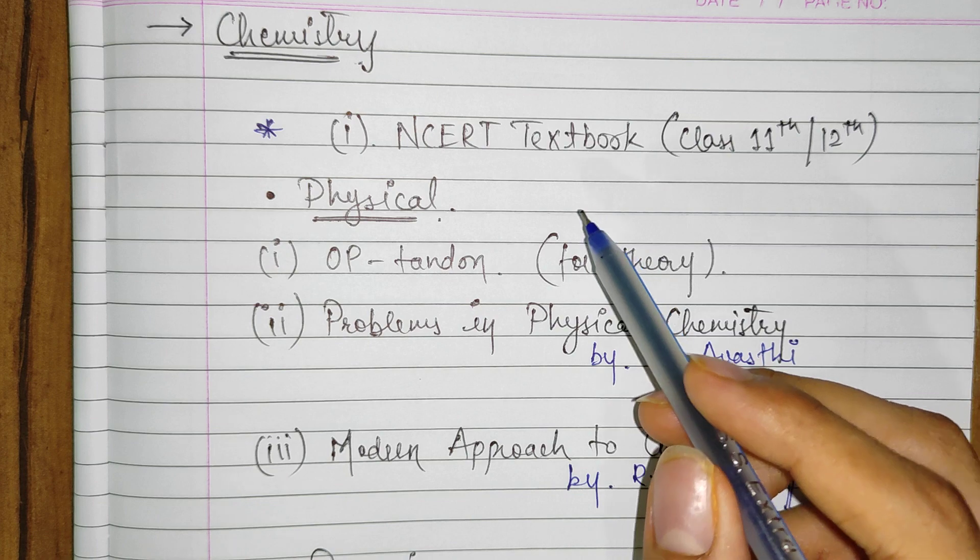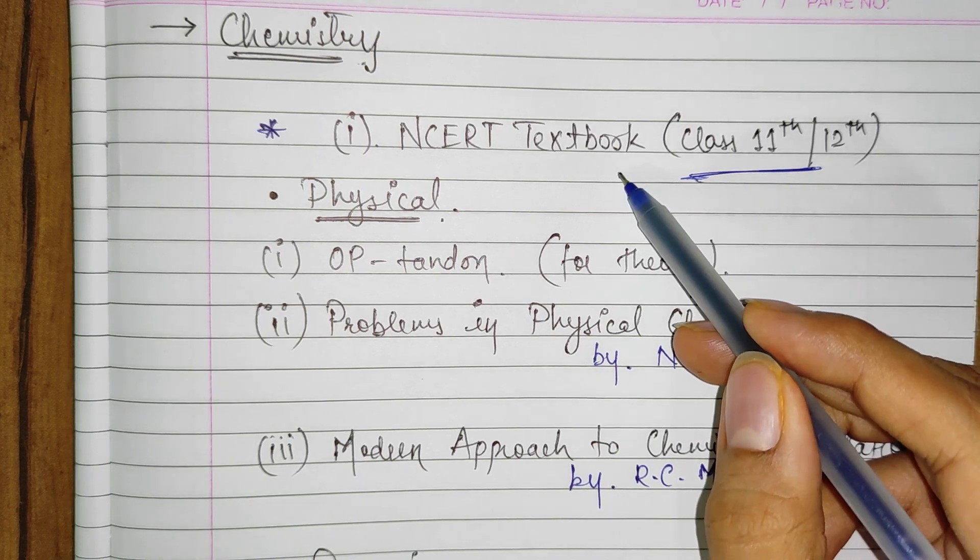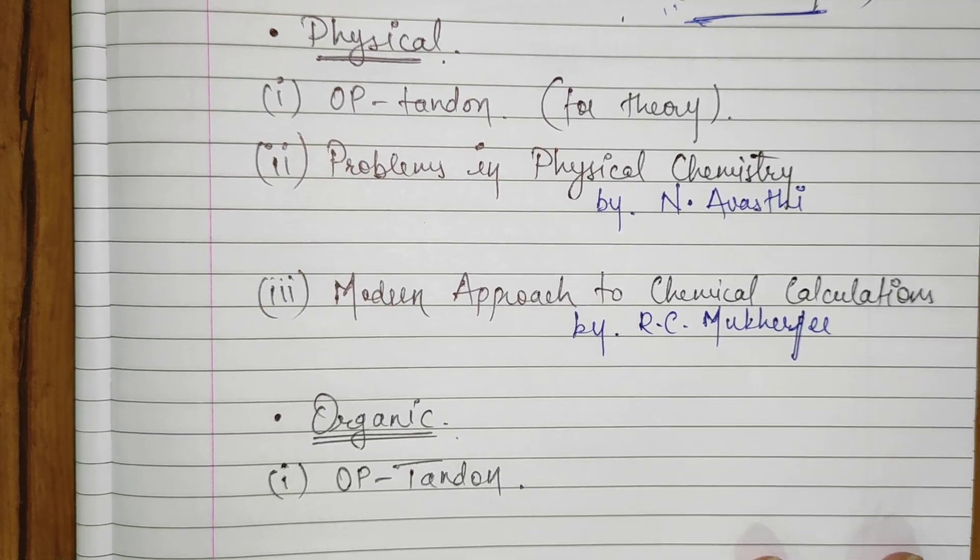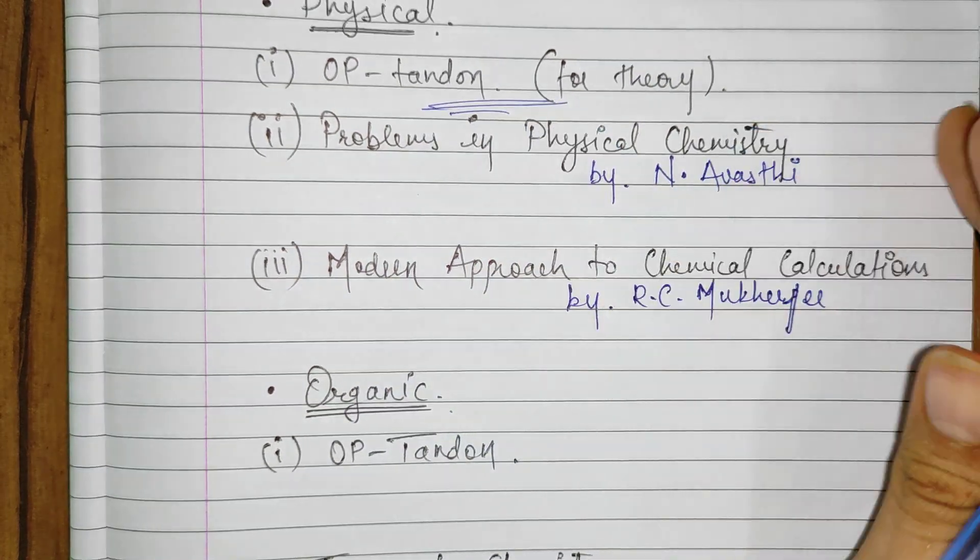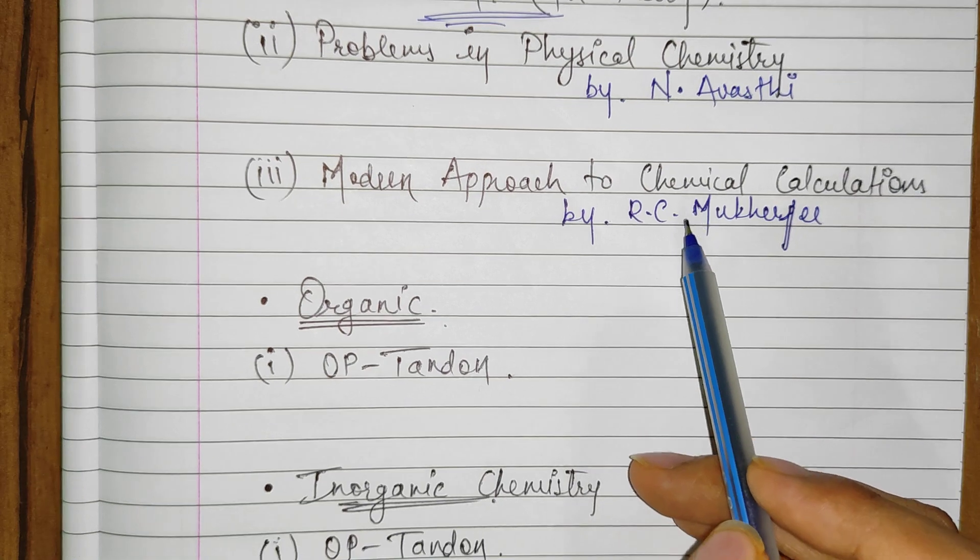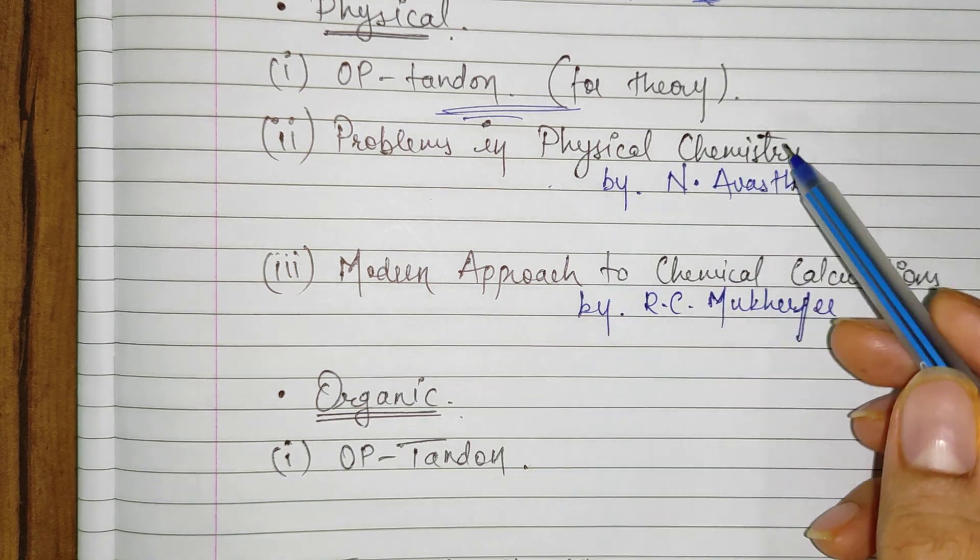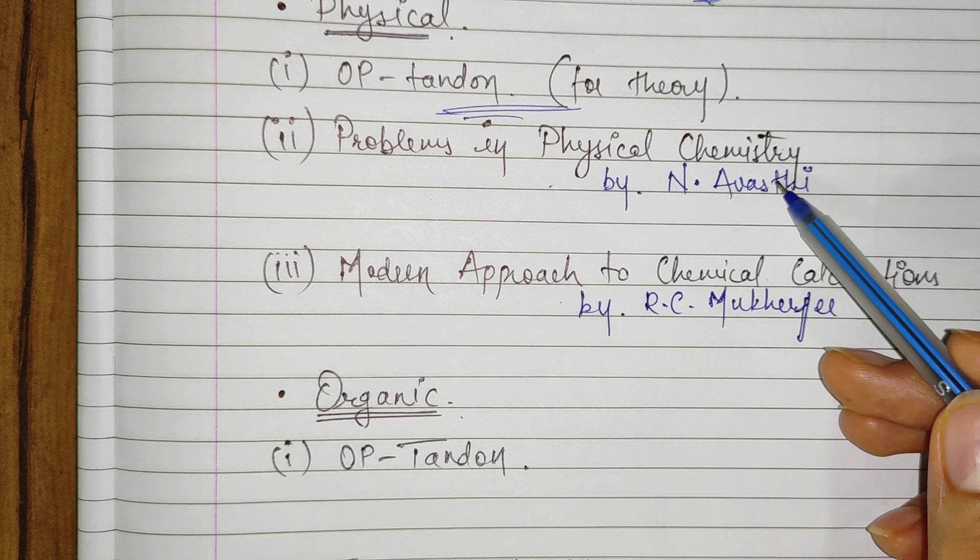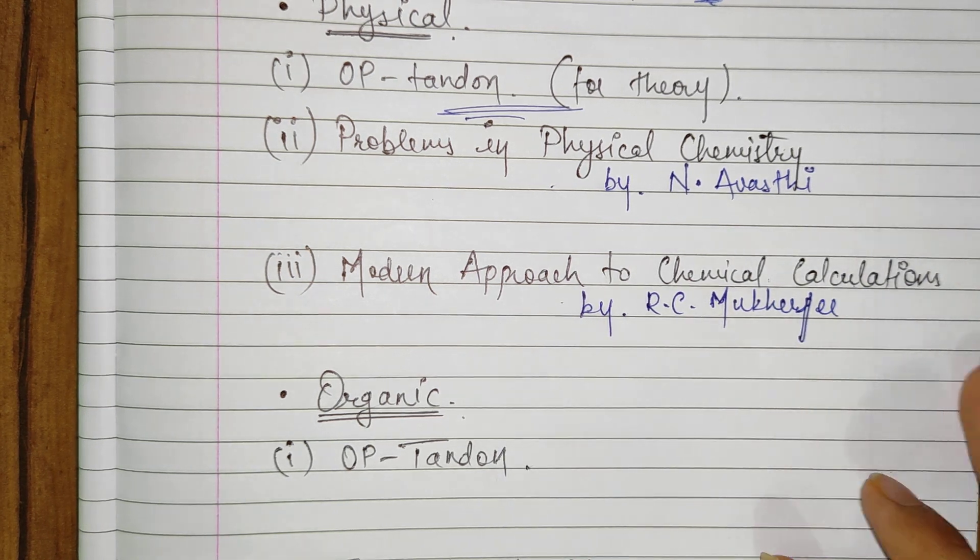For Chemistry, NCERT textbook class 11th and 12th is one of the best books to get a good grip on the basics. It explains all the topics in the simplest way possible. Now for books particular for physical, inorganic and organic chemistry. So if you are currently in class 11th, for physical chemistry I would suggest OP Tandon for reading the theory and either Problems in Physical Chemistry by N. Awasthi or Modern Approach to Chemical Calculations by R.C. Mukherjee sir for practicing the numericals. But I would recommend N. Awasthi or Problems in Physical Chemistry over Modern Approach to Chemical Calculations. Because the former is designed as per the latest formats of JEE and it surely has better questions.